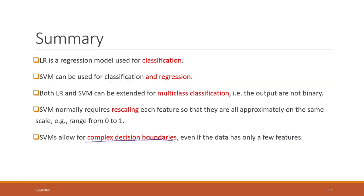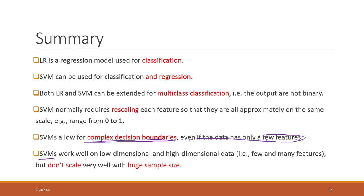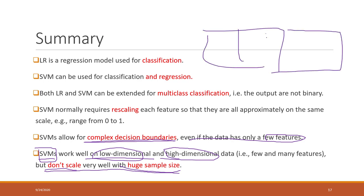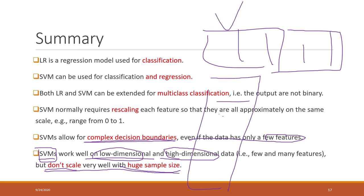SVM also allows for complicated decision boundaries even if you have only a few features. SVM works very well on low-dimensional data — one or two features — and also on high-dimensional data, like 100 or 200 features. However, if you have very many records, SVM will be less efficient because it doesn't scale very well with huge sample sizes.